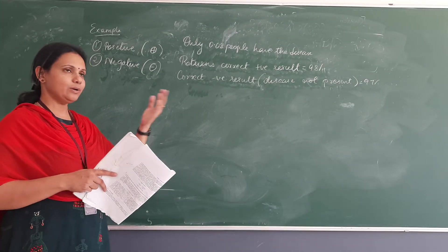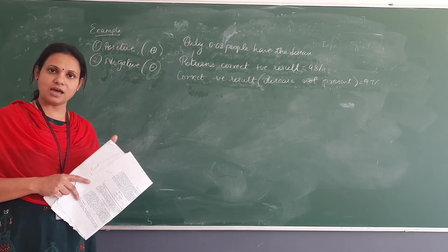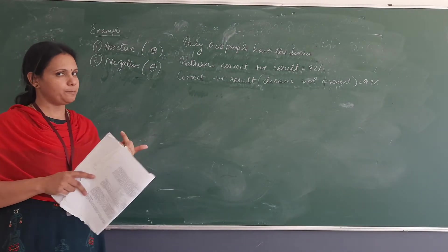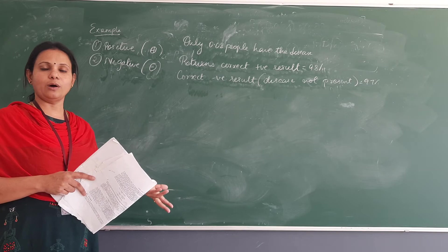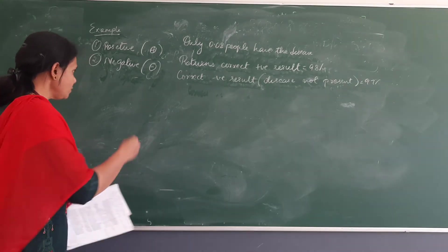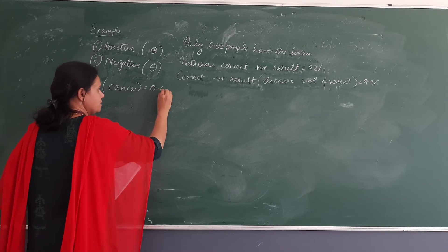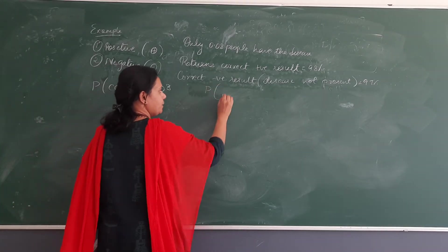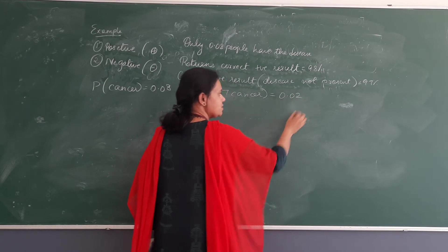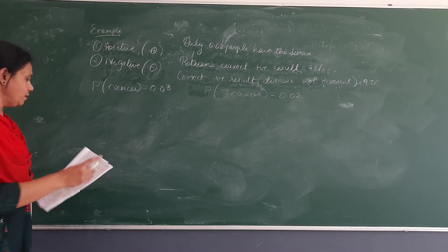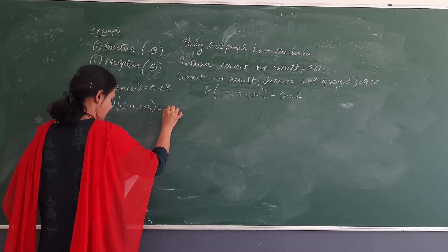A new patient has come in and the lab test shows a positive result. Based on that, we need to diagnose whether the patient has cancer or not. We have to find the maximum posterior hypothesis for both having cancer and not having cancer — whichever value is higher becomes the outcome. The probability of people having cancer is 0.08, so the probability of not having cancer is 1 minus 0.08, which is 0.92.